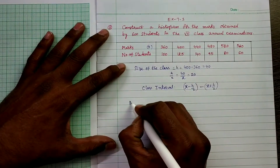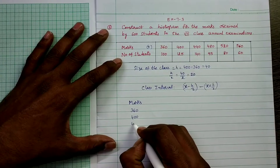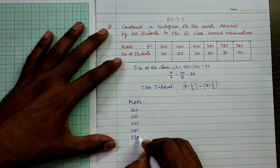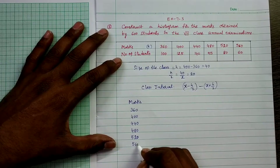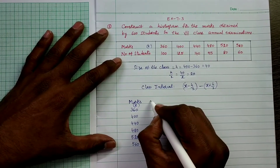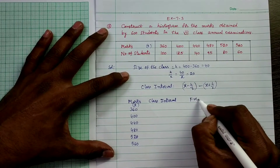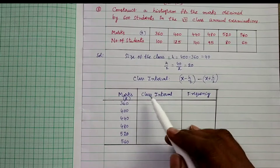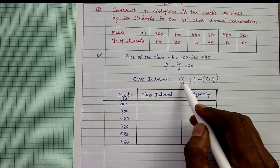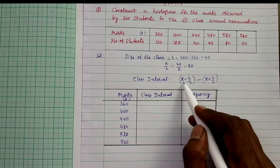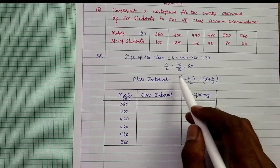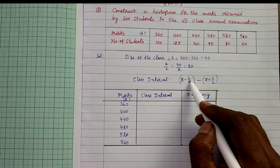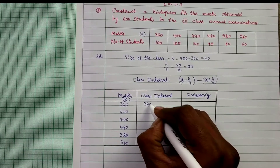The marks (class marks x) are: 360, 400, 440, 480, 520, 560. For the first class interval, x = 360: lower limit = 360 minus h/2 = 360 minus 20 = 340; upper limit = 360 plus 20 = 380. So the first class interval is 340 to 380.